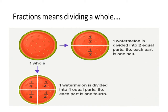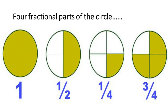Fractions means dividing a whole. One watermelon is divided into two equal parts, so each part is one half. One watermelon is divided into four equal parts, so each part is one fourth. Let us see four fractional parts of a circle: one whole, half, quarter, three fourth.